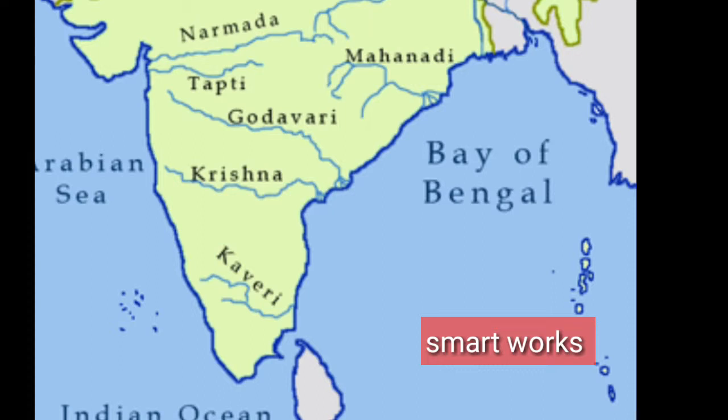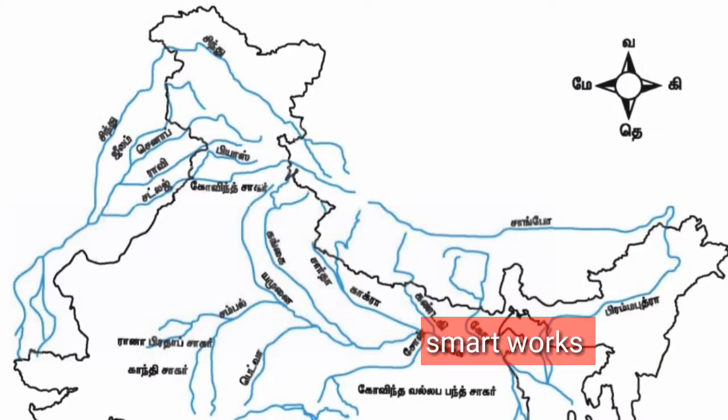The Peninsular rivers flow through different routes. The river flows through the middle of the land, eventually reaching the sea. These are the key rivers of the Indian subcontinent.